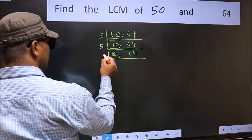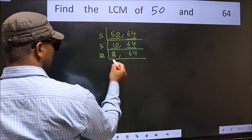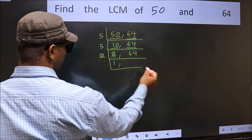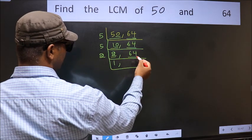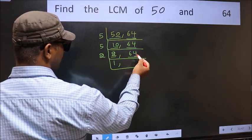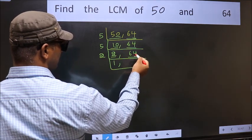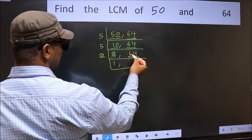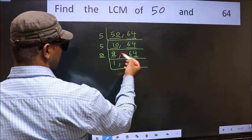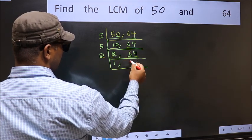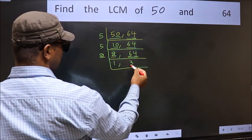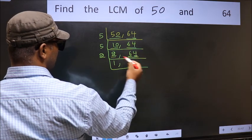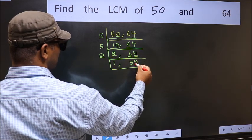Now here we have 2. 2 is a prime number, so 2 ones is 2. The other number 64 — last digit 4, even, so this is divisible by 2. First number 6. When do we get 6 in the 2 table? 2 threes is 6. The other number 4. When do we get 4 in the 2 table? 2 twos is 4.